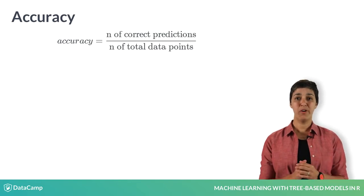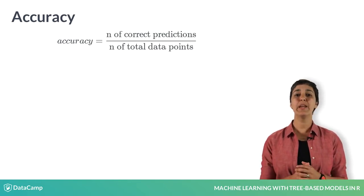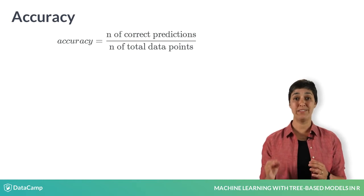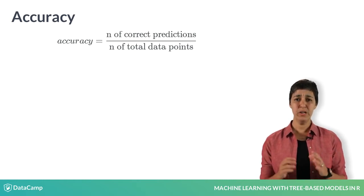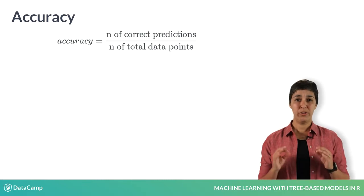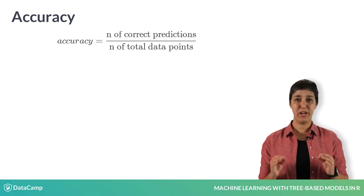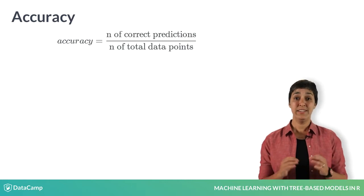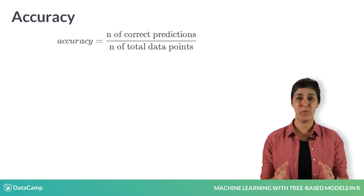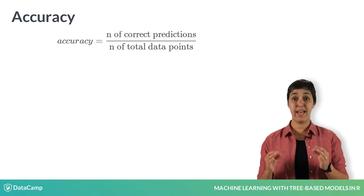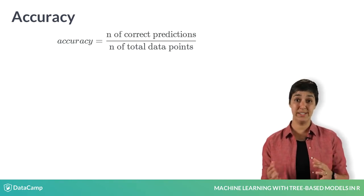Rather than looking at the overall accuracy, you might want to look at how many examples were incorrectly classified in each class. For example, when a doctor makes a medical diagnosis that a patient has cancer when he doesn't, this has very different consequences than making the call that a patient doesn't have cancer when, in fact, he does.